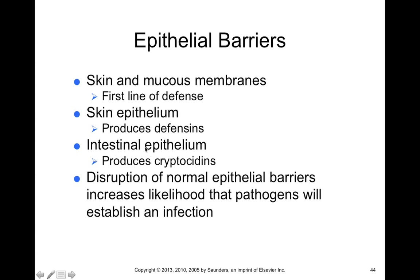The intestinal epithelium along your GI tract produces cryptocidins, which are a class of antimicrobial molecules. Disruption of these normal epithelial barriers — like disruption of the skin epithelium or intestinal epithelium — can increase the likelihood that a pathogen establishes an infection. You're more likely to get a skin infection if there's a wound, or a gut infection if there's an ulcer or wound within the gut mucosal wall.